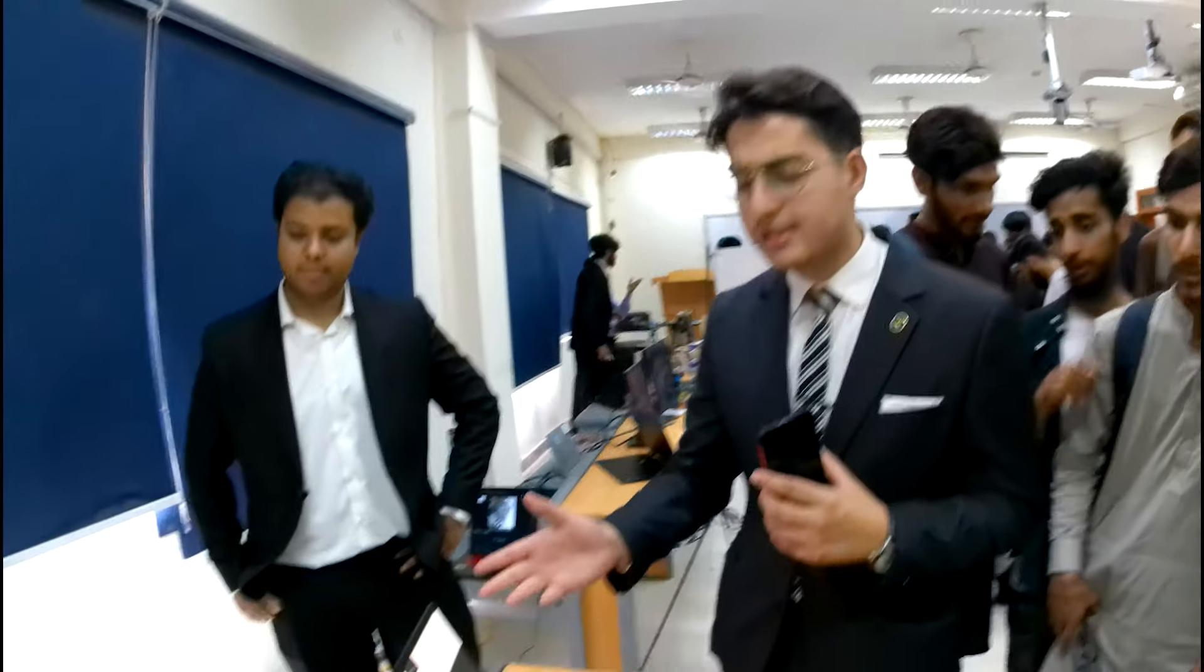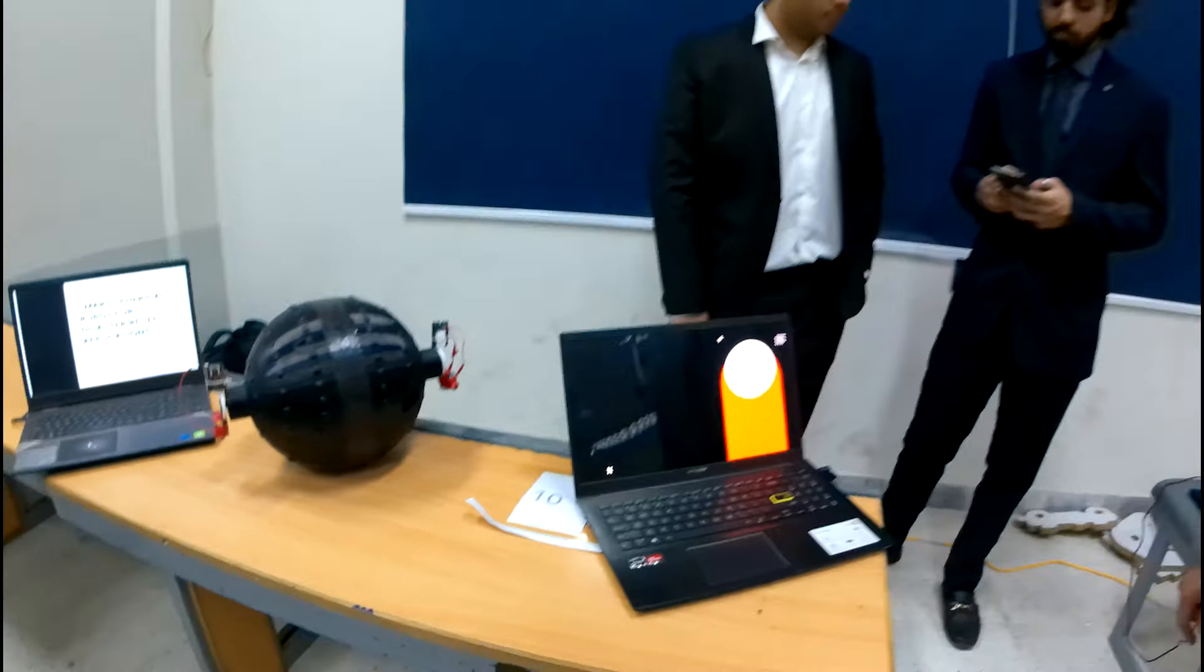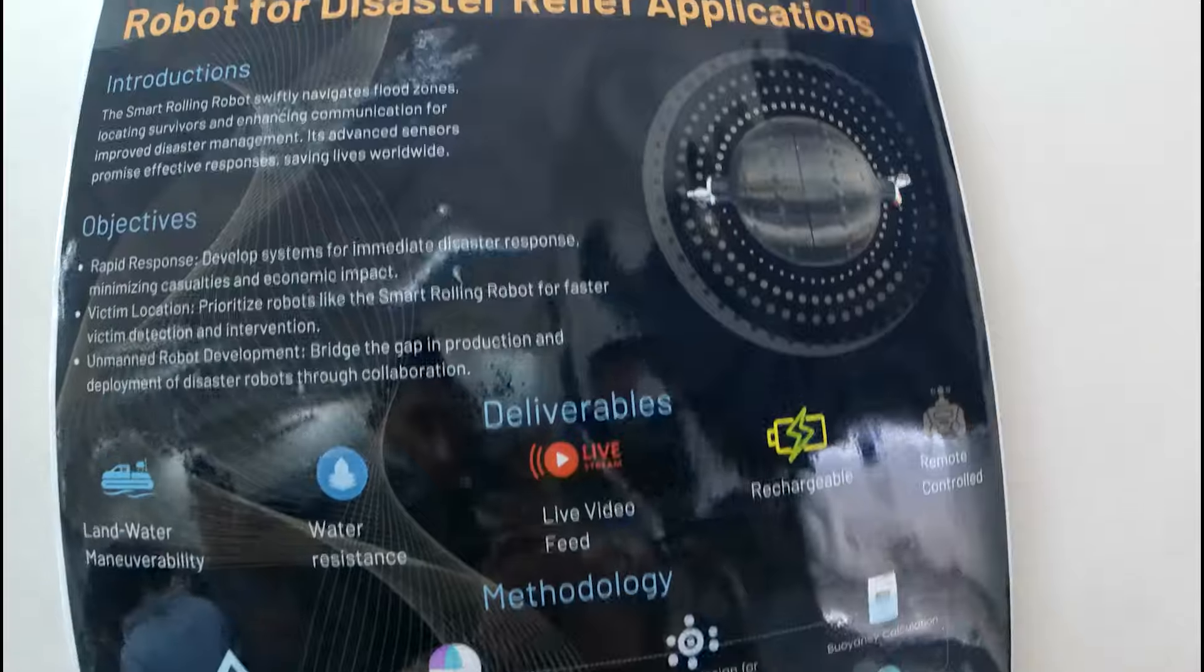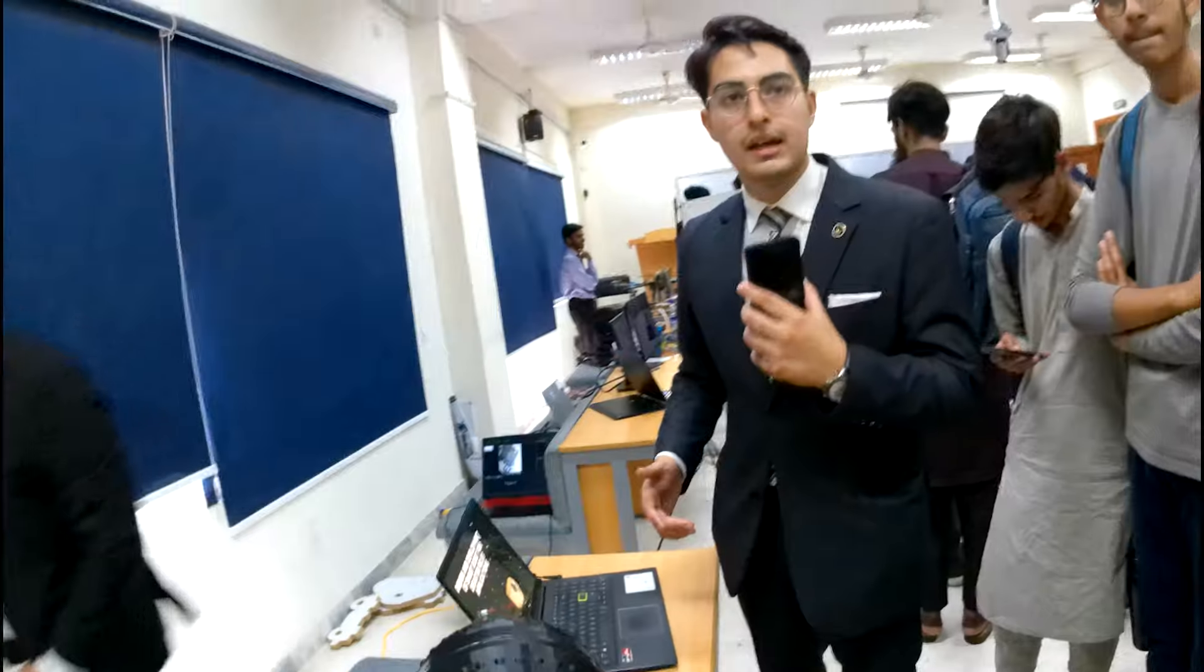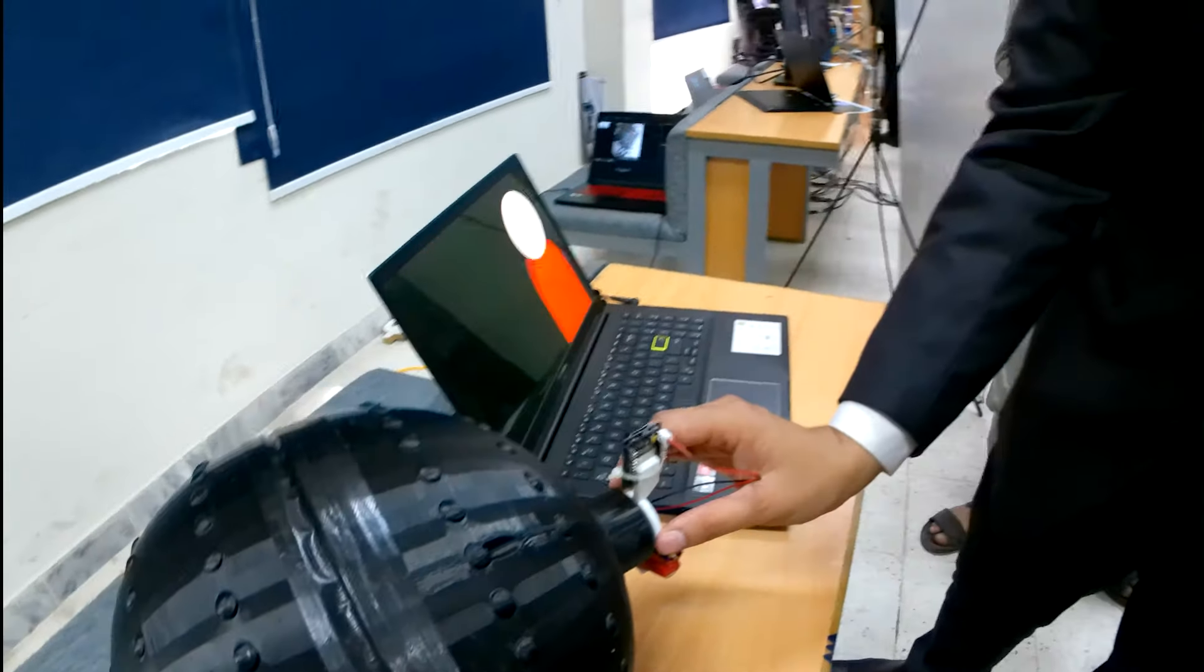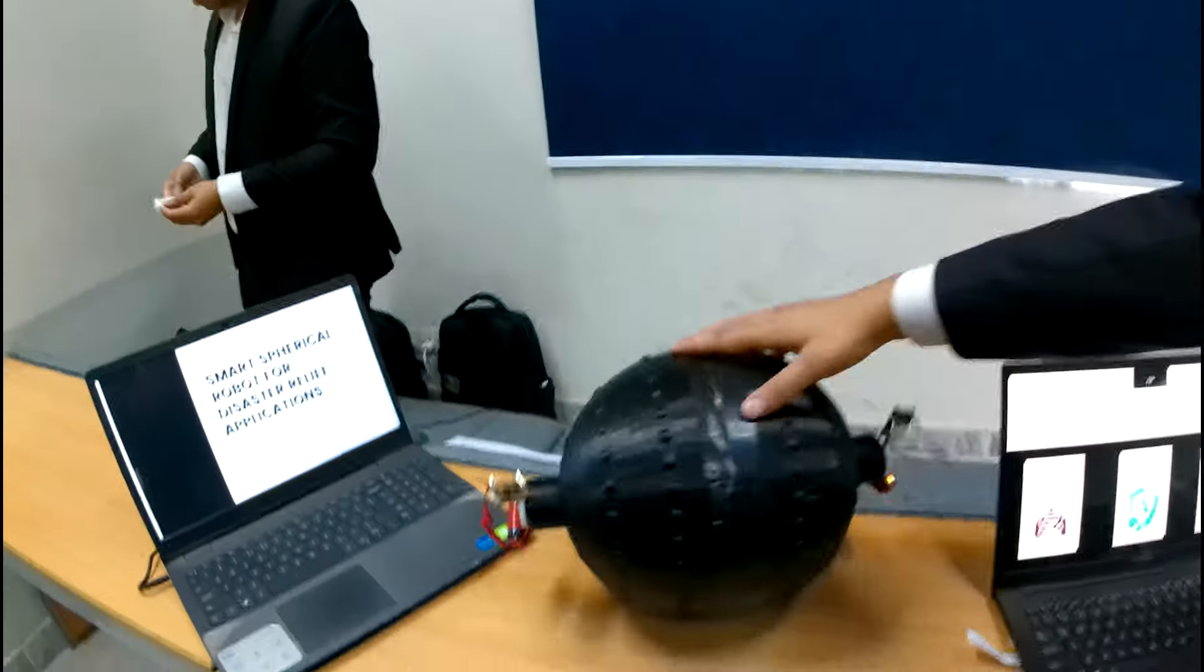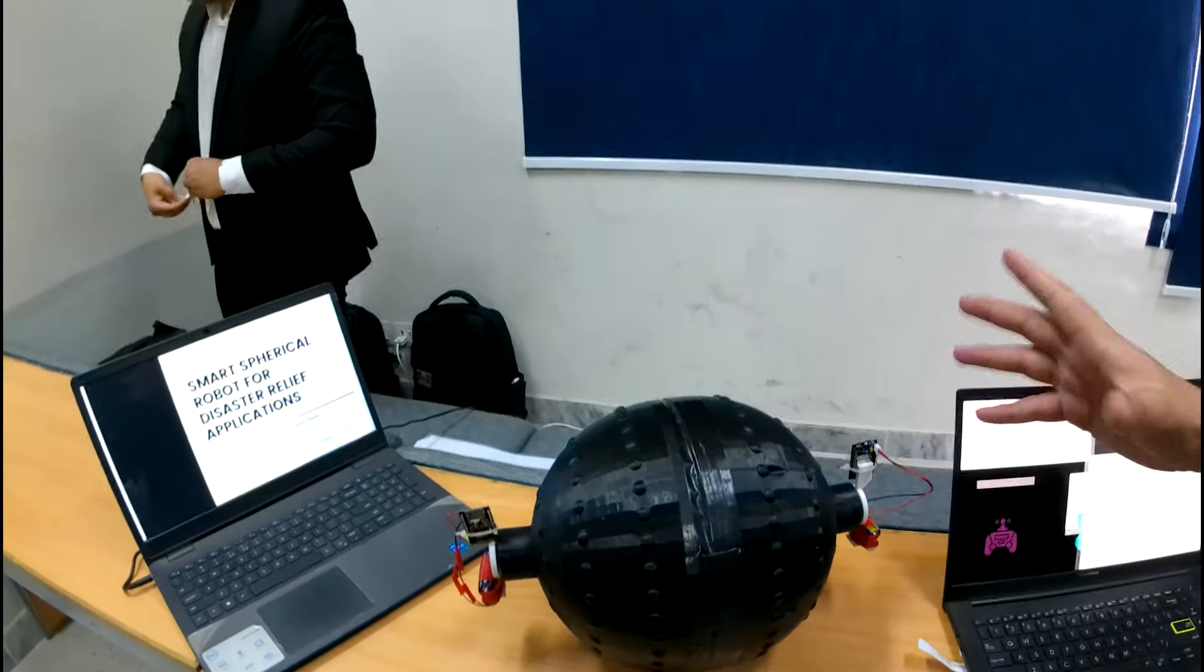This is our FYP. This is supposed to be an amphibious spherical robot. It's designed to move both on land and water and that amphibious ability allows it to be applicable in disaster relief applications. Specifically in flood applications, which is important for Pakistan because we have floods every one or two years. This is both rechargeable and it's remote controlled. These two camera modules that you see will actually give you the live feed. It's designed in a way that the internals as well as these camera modules remain stationary while the sphere moves. So the sphere moves but the camera modules remain stationary.